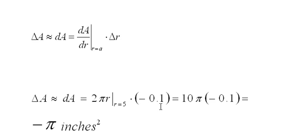Times the change in r, negative one-tenth of an inch. This equals 10 pi times negative 0.1, which finally equals negative pi square inches, or about negative 3.14 square inches.